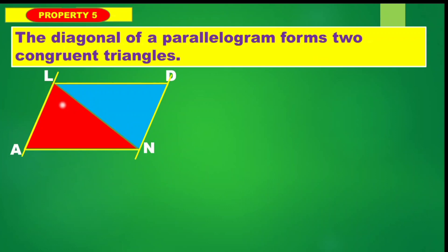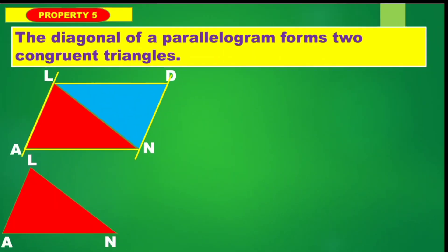Remember the alternate interior angles formed by the transversal line. For example, this angle here is congruent to that one — alternate. And that angle here will also be congruent to that one. So remember the correspondence. We have triangle LAN and triangle NDL.